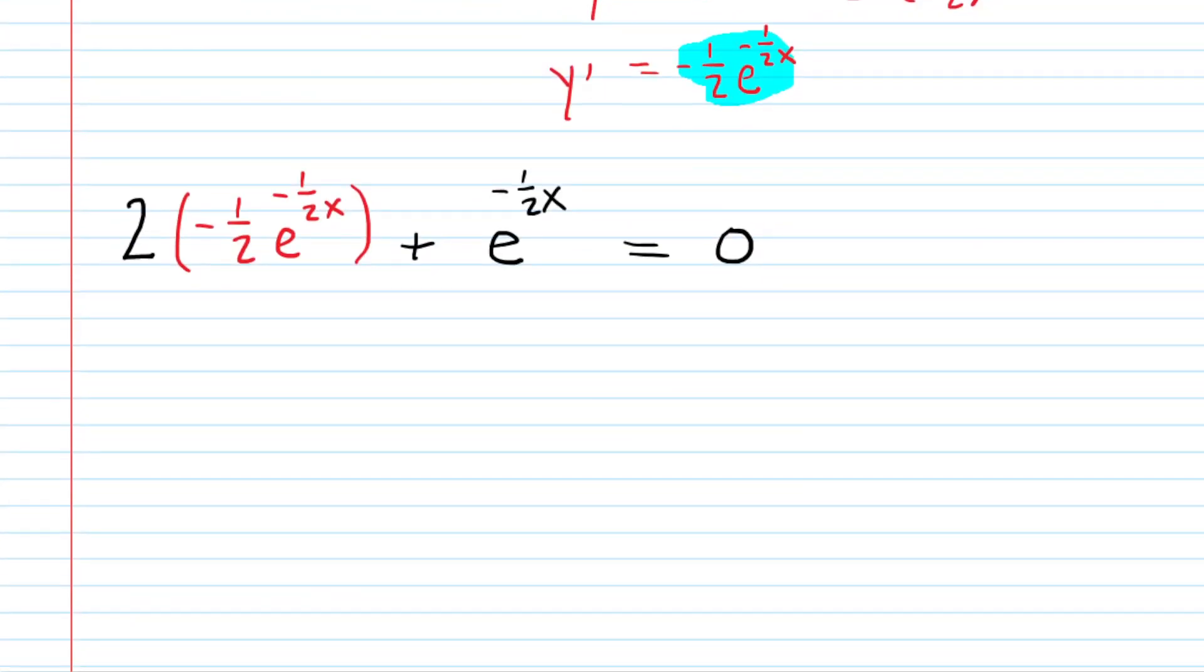Now we simplify this. We multiply 2 and -1/2, which gives us -e^(-1/2 x). Then -e^(-1/2 x) added to e^(-1/2 x) will cancel because this has coefficient -1 and this has coefficient +1.